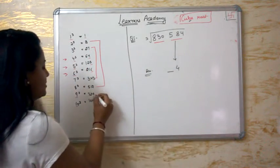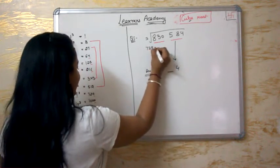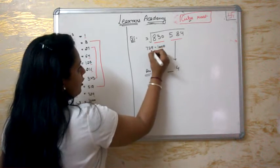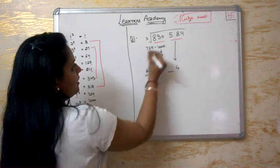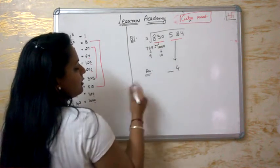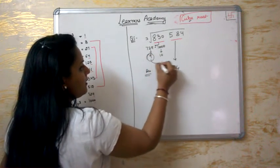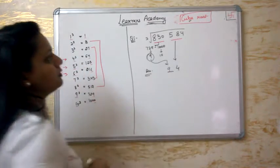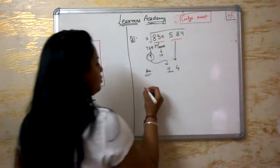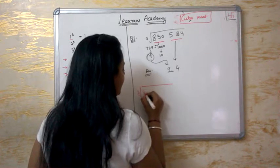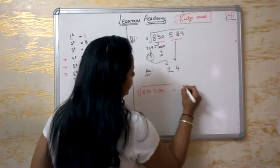Now I need the number at the next place. It is 830. 830 is between 729 and 1000 — that is, between 9 cubed and 10 cubed. So this number lies somewhere between these two. We always take the lower one. So the answer will be 94. The cube root of 830584 is 94.